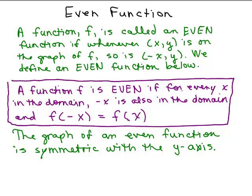In the box, that's the definition: a function F is even if for every X in the domain, negative X is also in the domain and F(-X) equals F(X). That means when you plug in negative X for X, you get exactly the same function. The graph of an even function is symmetric with the Y-axis.